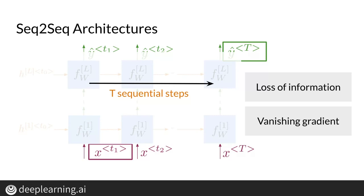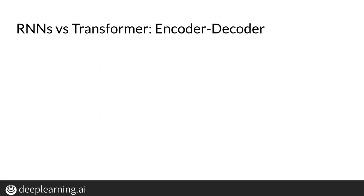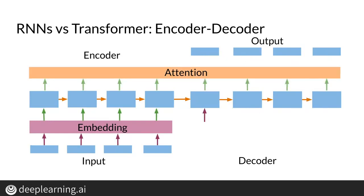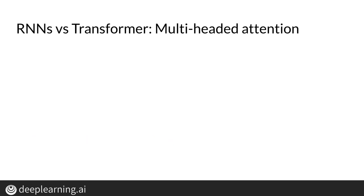So to recap, there is a loss of information, and then there is the vanishing gradients problem. Transformers are models specially designed to tackle some of the problems that you just saw. For instance, let's recall the conventional encoder-decoder architecture, which is based on RNNs and needs to compute capital T sequential steps. In contrast, transformers are based on attention and don't require any sequential computation per layer — only one single step is needed. Additionally, the gradient steps that need to be taken from the last output to the first input in a transformer is just one, whereas for RNNs the number of steps is equal to capital T. And finally, transformers don't suffer from vanishing gradient problems that are related to the length of the sequences. Transformers differ from sequence-to-sequence by using multi-head attention layers instead of recurrent layers.